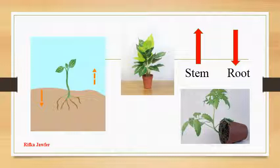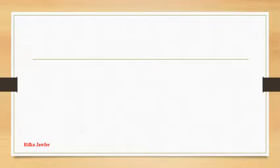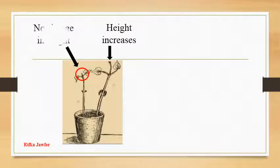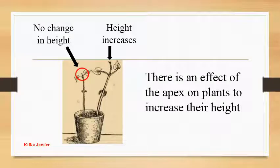Let us think of a small activity to identify the reason behind this. You select two similar plants, then keep the apex or the tip of one plant and remove the apex of the other plant. Supply all the environmental conditions equally to both for about one week and observe what happens. You will observe that the plant with apex grows and height increases and plant without the apex will have no change in height. So we can conclude that there is an effect of the apex to increase their height.